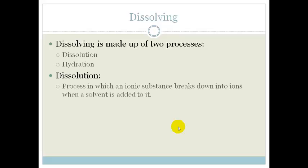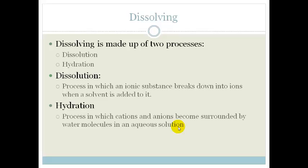So the dissolution was the process in which the ionic substance breaks down into ions. So that's the point where the water molecules are pulling the chloride and sodium ions off the molecule, the big crystal. And then you've got hydration. And this is the process in which the cations, the positive ions, and the anions, the negative ions, become surrounded by water molecules.